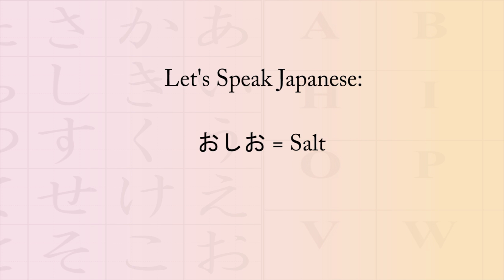The last example word is oshio, which uses the letters o, shi, and o. Put together: o-shi-o, or faster: oshio. The meaning is salt. If you want to say please pass the salt, in Japanese that would be oshio o kudasai. Once again: oshio o kudasai. Note that some people will drop the first o and say shio, but the most proper way of pronouncing it is usually oshio.